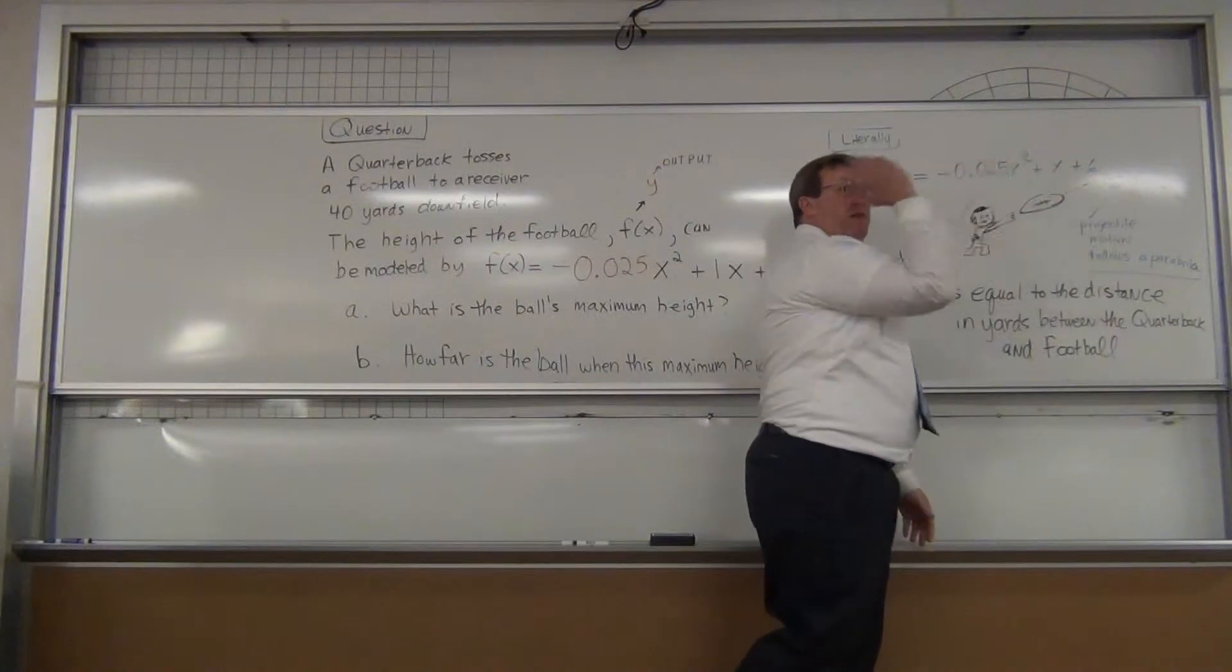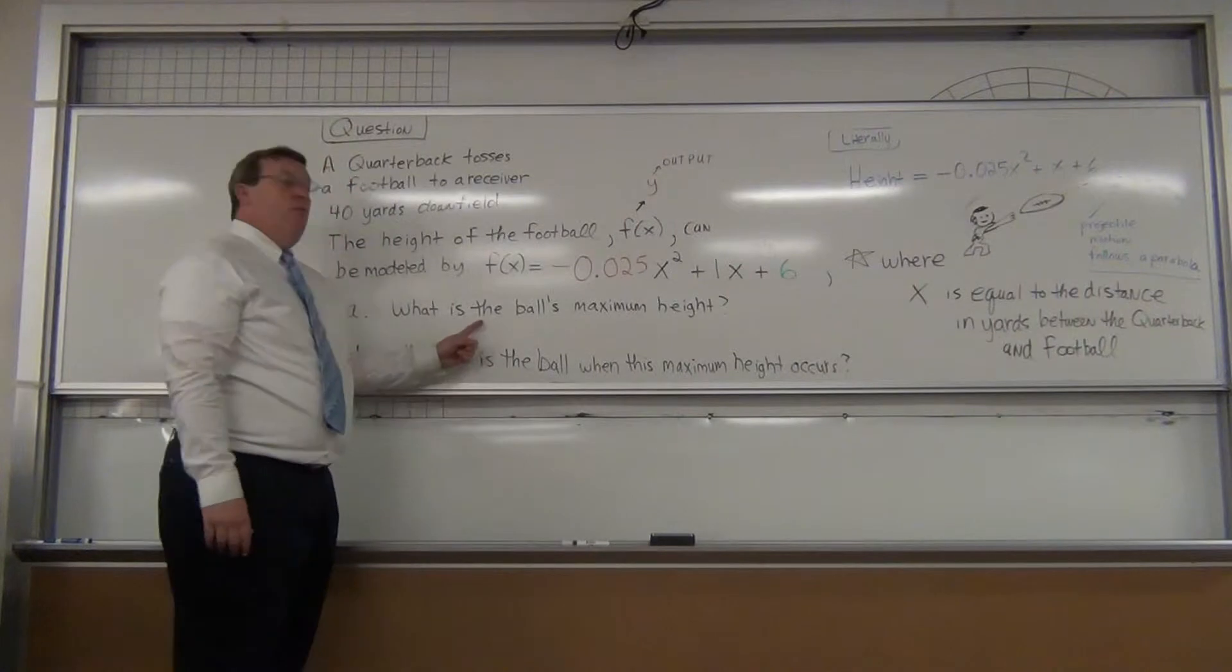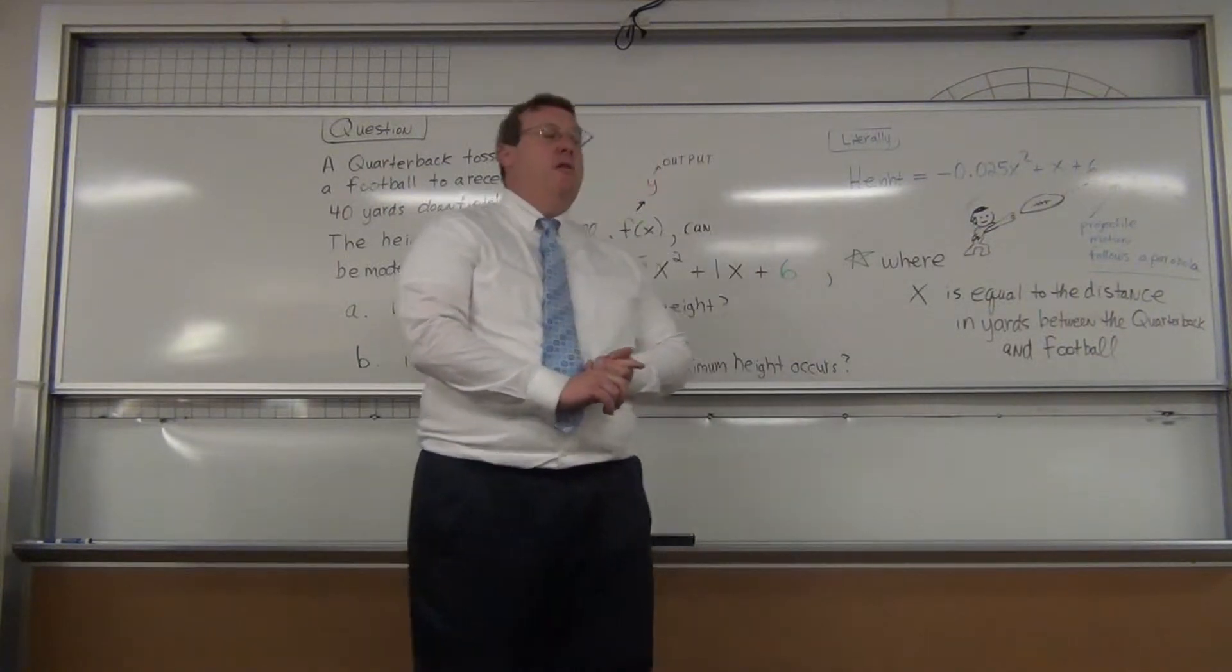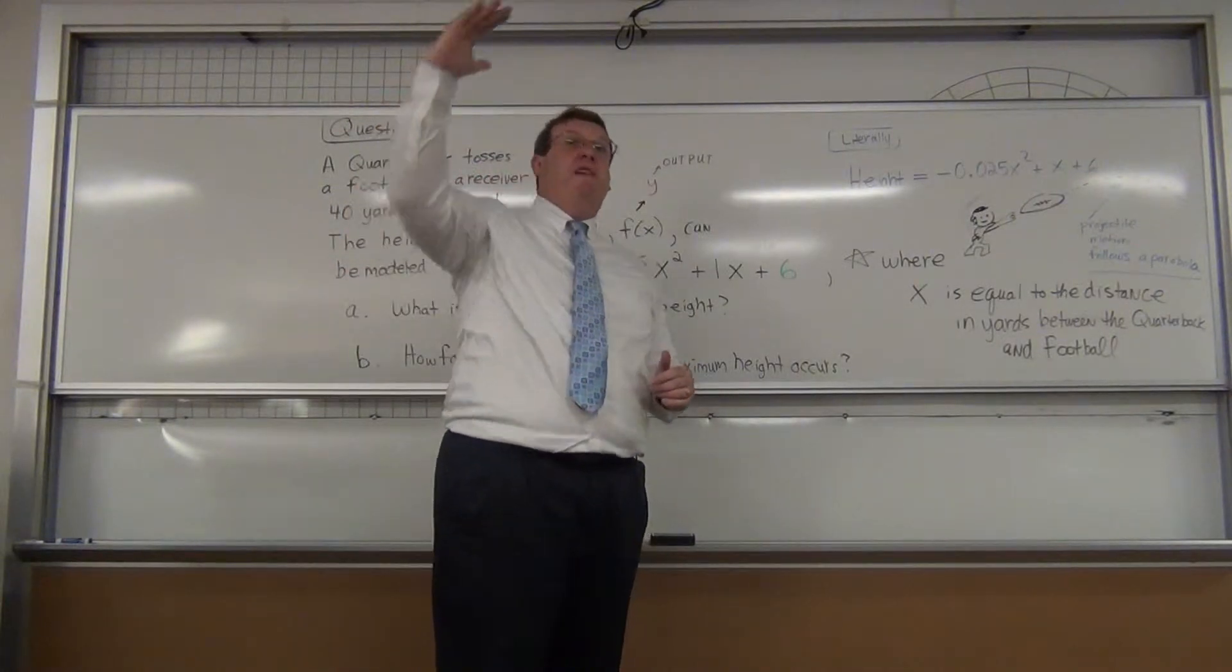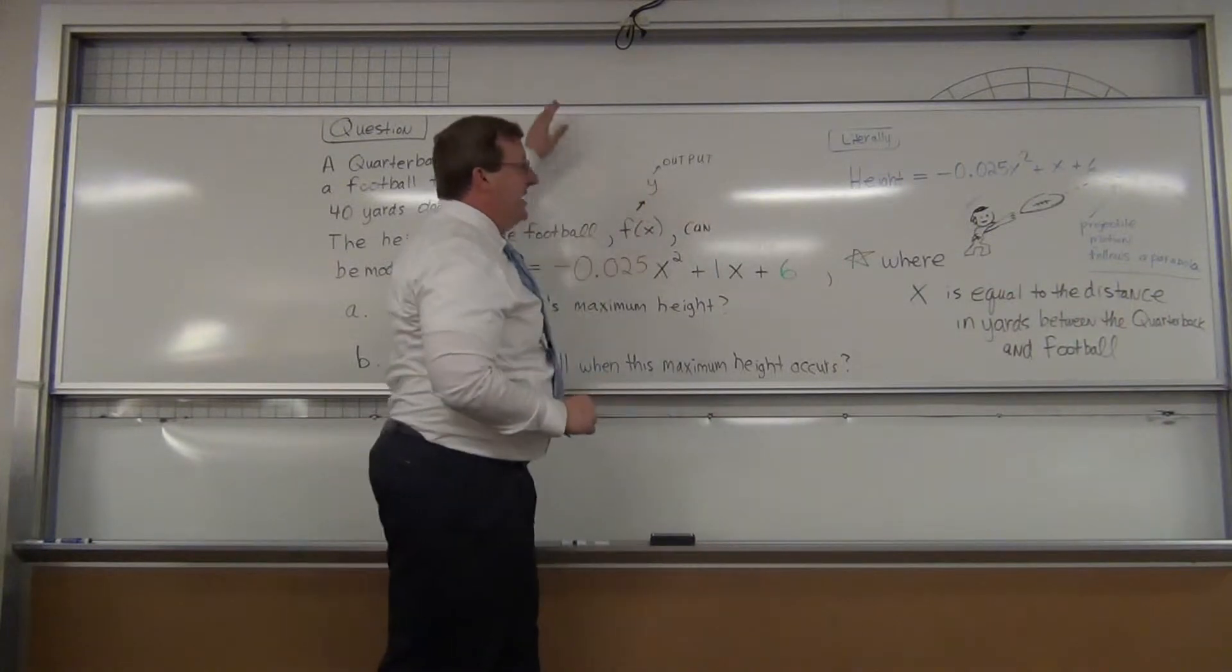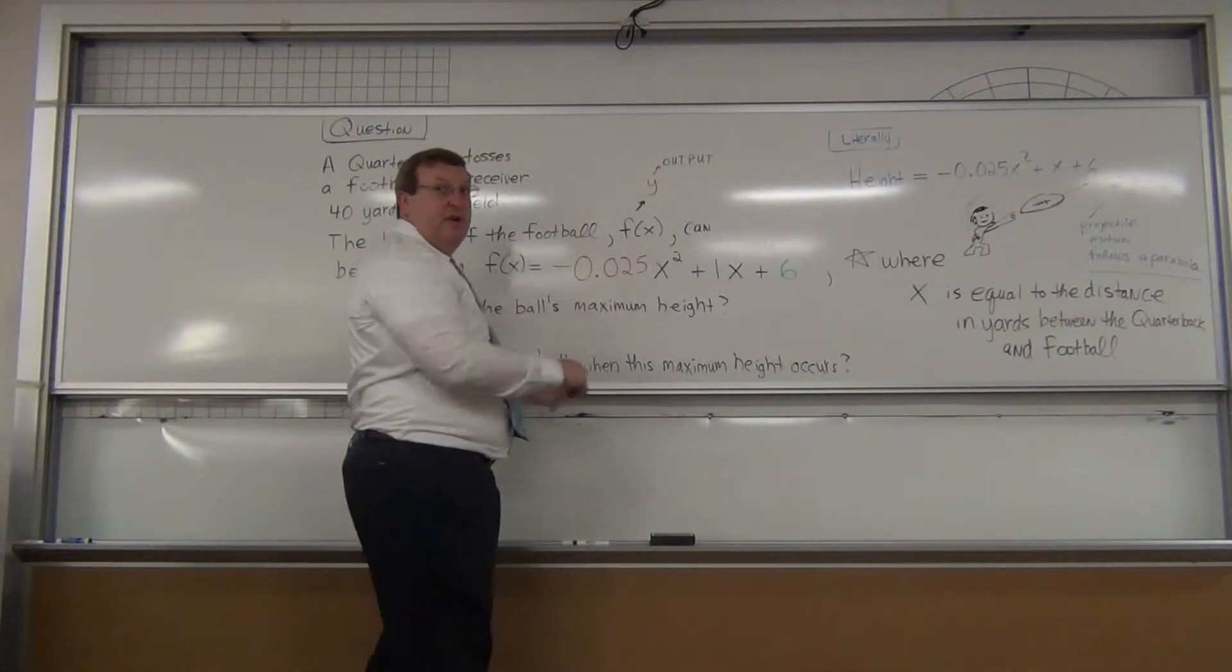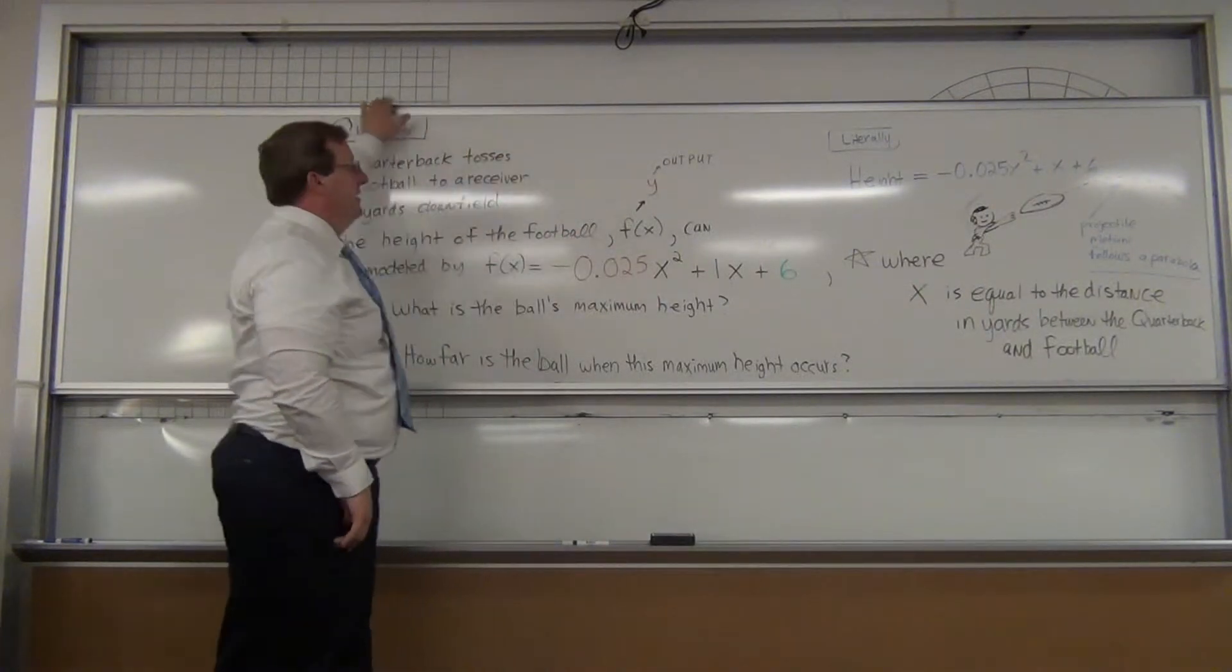So keywords here: maximum height and parabola. Hopefully if you've watched my earlier video on finding a vertex, vertex should have screamed at you. A vertex is where you find the maximum value, the maximum output of a function. And did you notice that this seems to be opening up down? We call it down with a frown. And we notice that this a value is negative. So if you look at a parabola it opens down and has a negative value in front of the x squared.